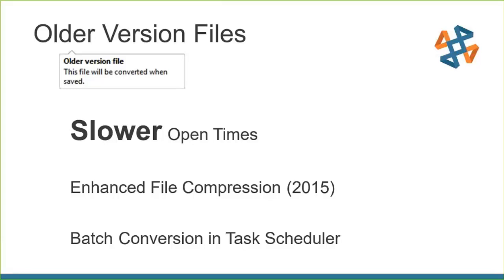Older version files cause slower open times, especially those saved before SOLIDWORKS 2015. Around 2015, SolidWorks changed their file compression to make files smaller and faster to open. Save everything into the latest version — you'll see the numbers later supporting that newer versions open faster. There's also a batch conversion in the Task Scheduler so you don't have to do it manually.